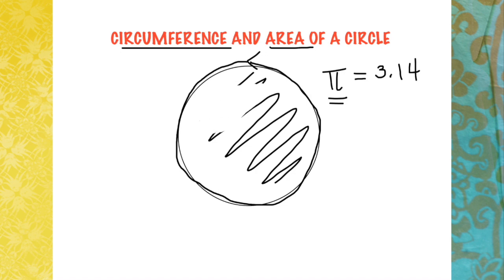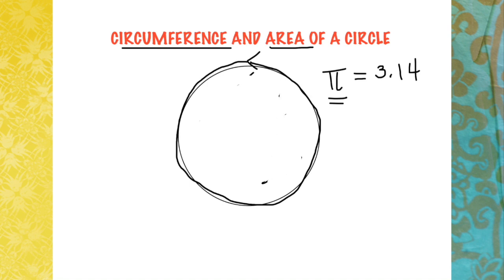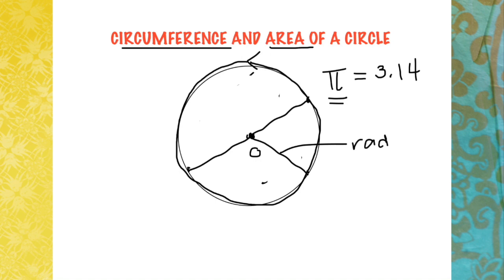Diameter is a straight line segment that passes through the center of your circle. If this is the center of your circle, let's name it O, your diameter will be a straight line segment that passes through O where both endpoints lie on the circle. The last term is radius — from the center towards a point which lies on the circle. That means your radius is half of your diameter.